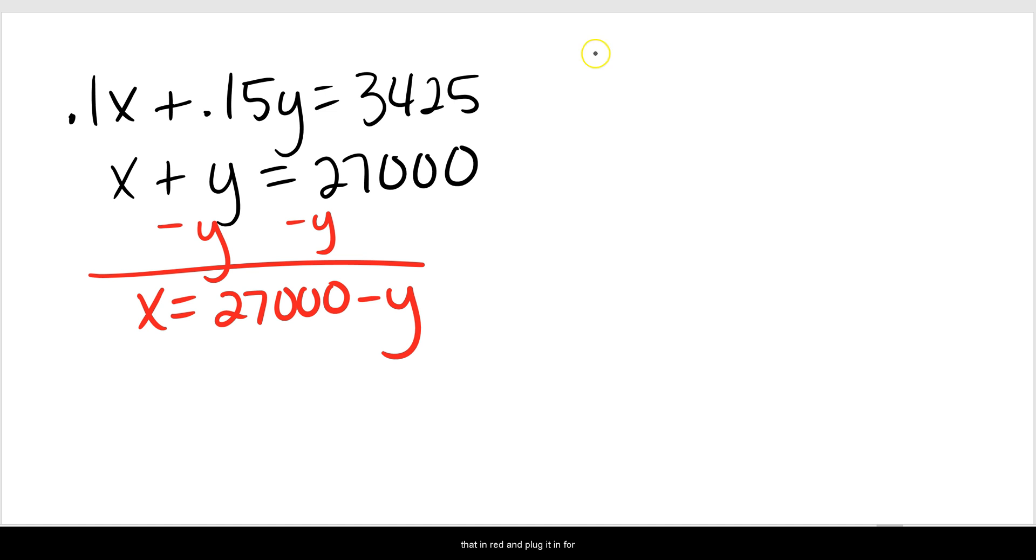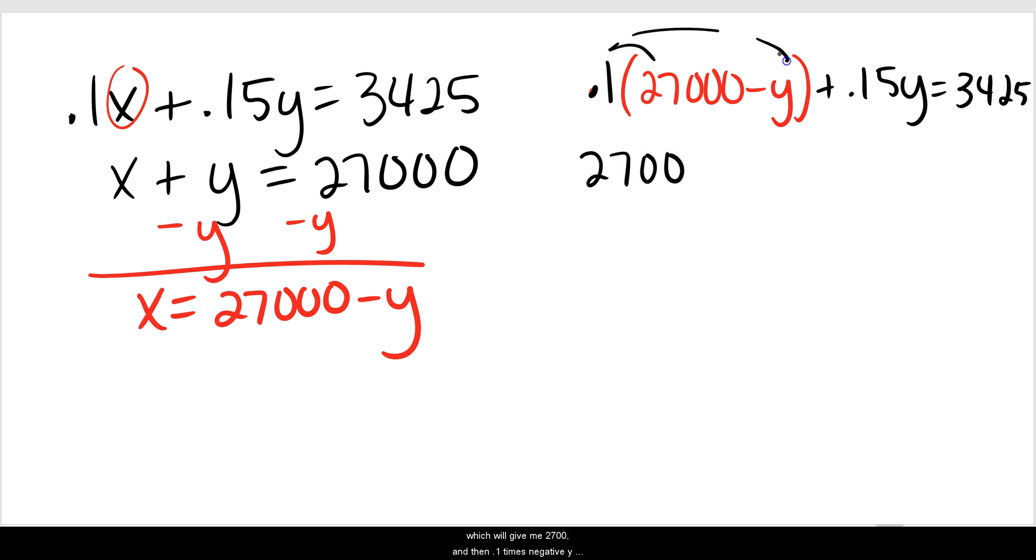I'm going to take that in red and plug it in for X in the other equation. So it'll be 0.1 times 27,000 minus Y plus 0.15Y equals 3,425. Now I'm going to distribute 0.1 with 27,000, which will give me 2,700. And then 0.1 times negative Y will be negative 0.1Y. Then bring down that plus 0.15Y equals 3,425. Now I'm going to combine like terms. Negative 0.1 plus 0.15 is going to give me 0.05Y. Bring down 2,700 plus 0.05Y equals 3,425.